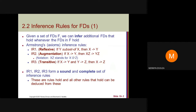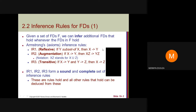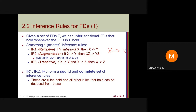Given a set of functional dependencies F, we can infer additional functional dependencies that hold wherever the dependencies in F hold. These are Armstrong's inference rules. The first one is the reflexive rule: if Y is a subset of X, then X determines Y. Similarly, since X is always a subset of itself, X determines X.